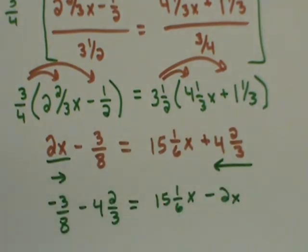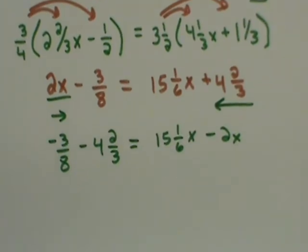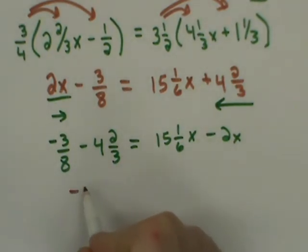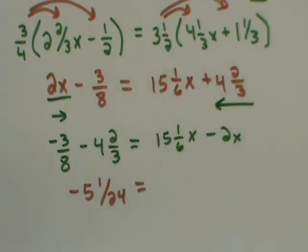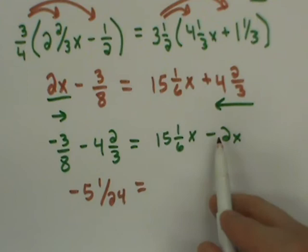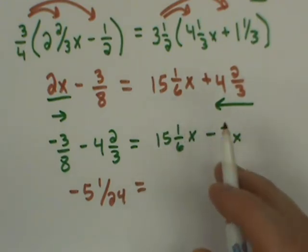Want to simplify and see where that takes me. Again, I'm going to let the calculator do all the work here. So I've got this negative 3 eighths and I want to subtract 4 and 2 thirds. Calculator tells me it's negative 5 and 1 24th. Equal, I don't need a calculator for this common sense. It's 15 take away 2, it's 13, so it would be 13 and 1 sixth x.